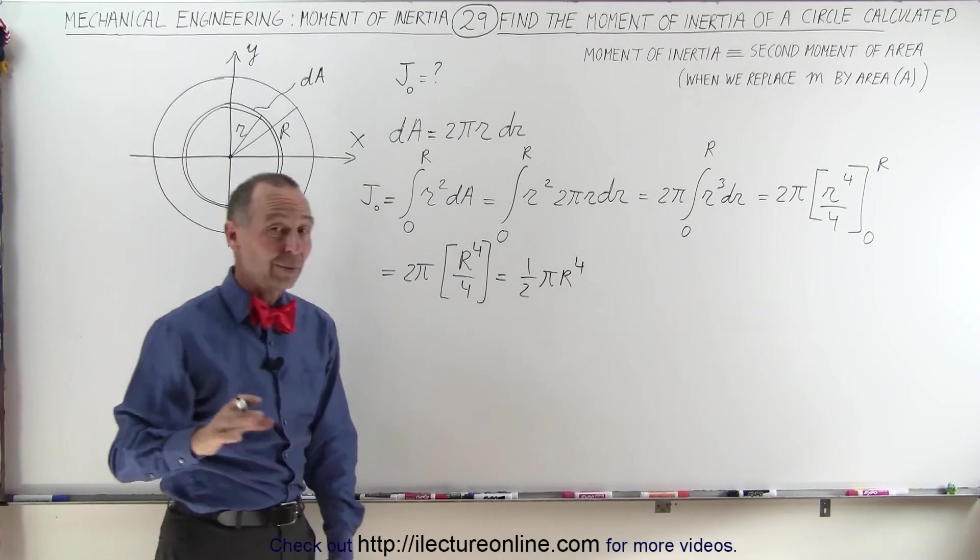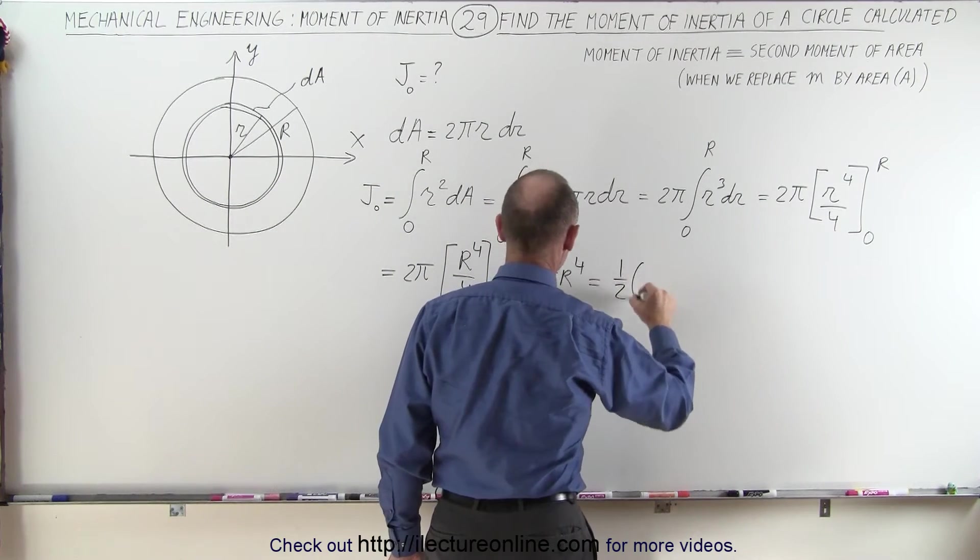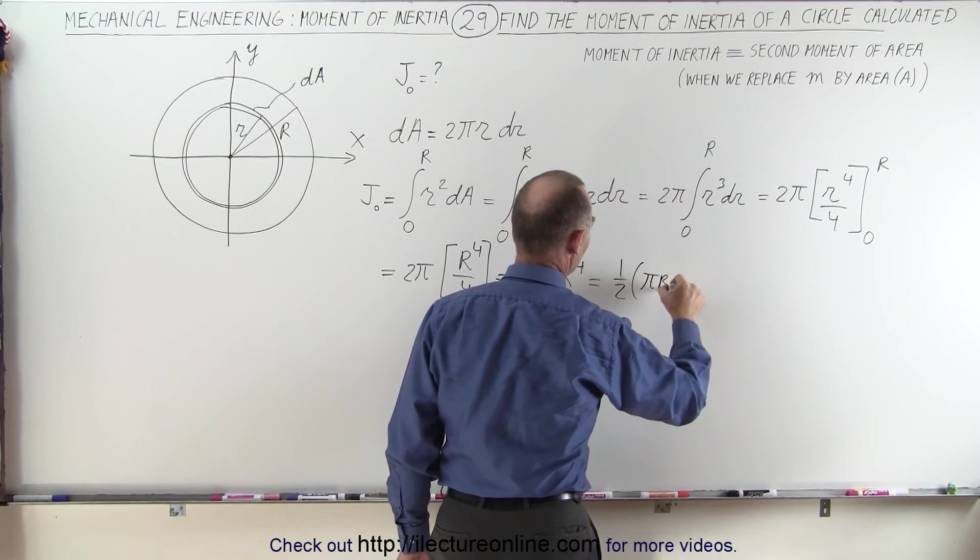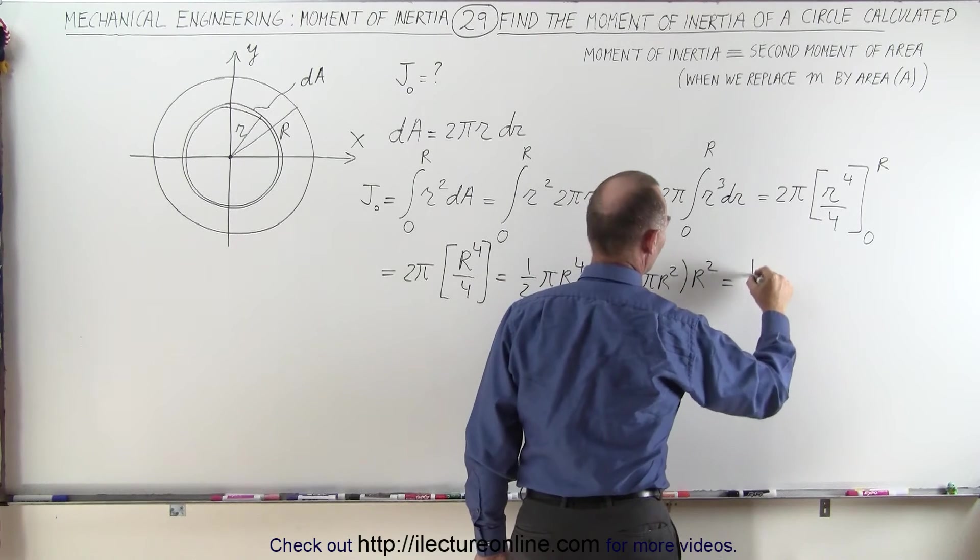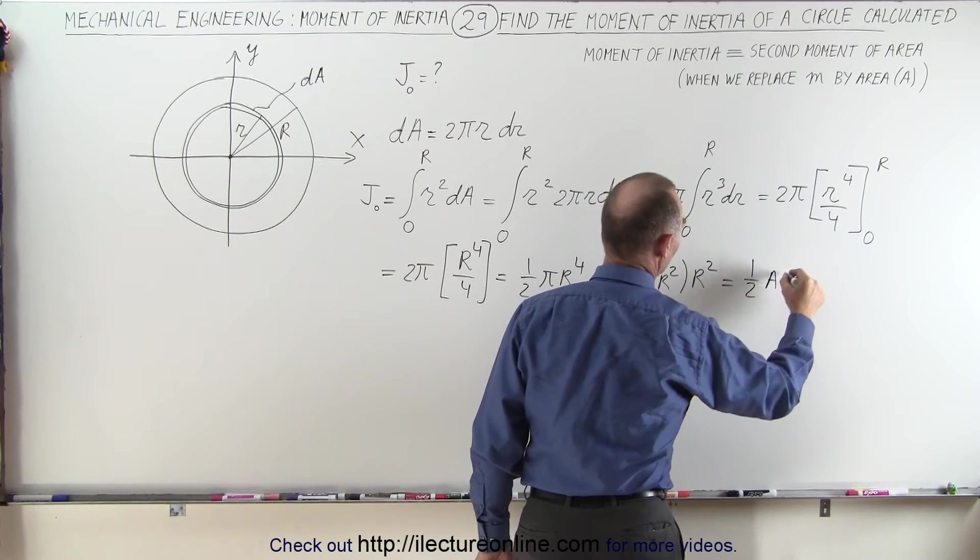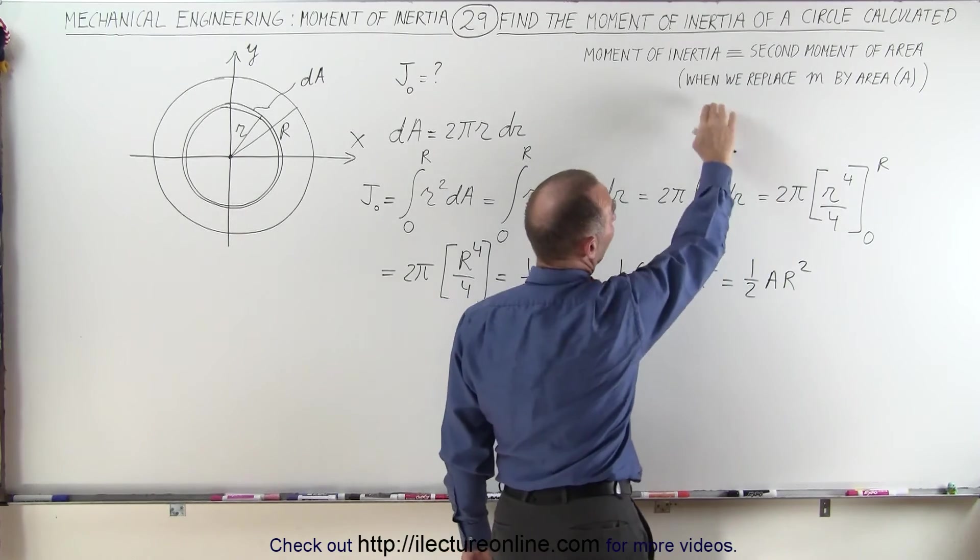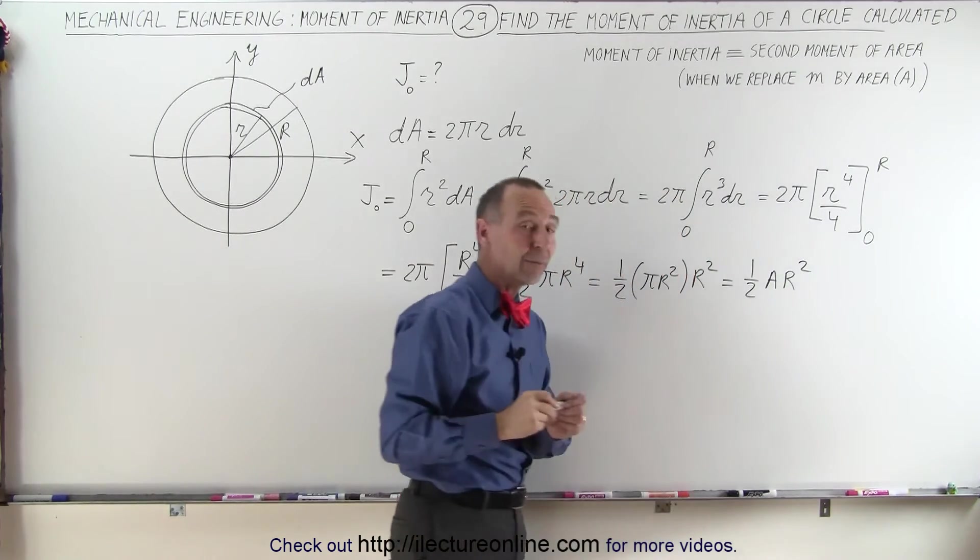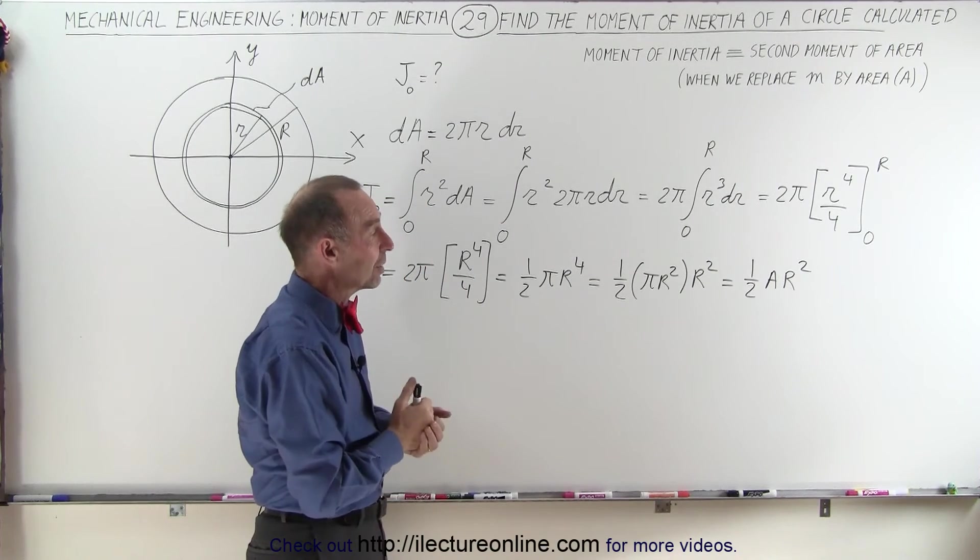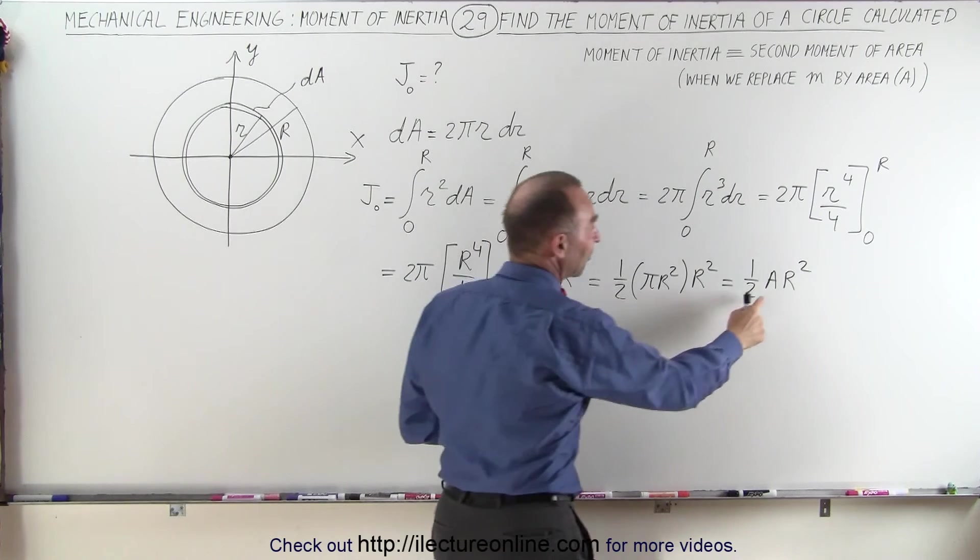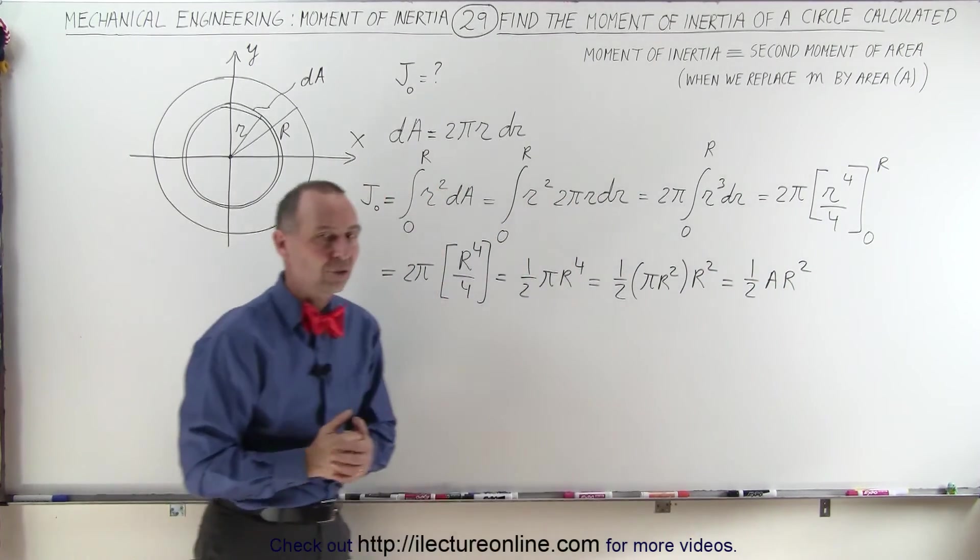And again, just like we did before, we can pull out the area of the circle. So this becomes equal to 1 half times pi r squared times r squared, this being the area of the circle. So this is equal to 1 half times the area times r squared, which, if we replace the area by mass, as we suggest here, then that becomes the moment of inertia of an object that is like a cylinder that has mass equal to m. So it would be 1 half m r squared, or in case you use the area, it's 1 half area times r squared.